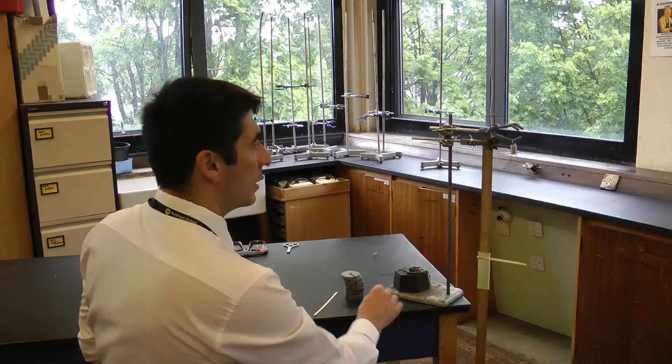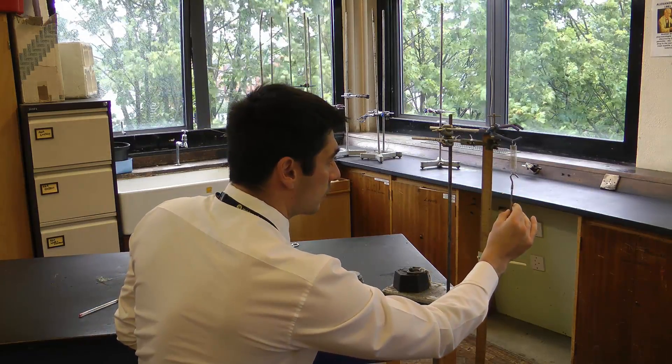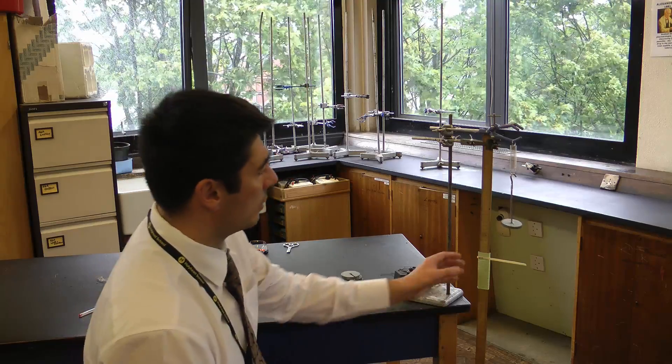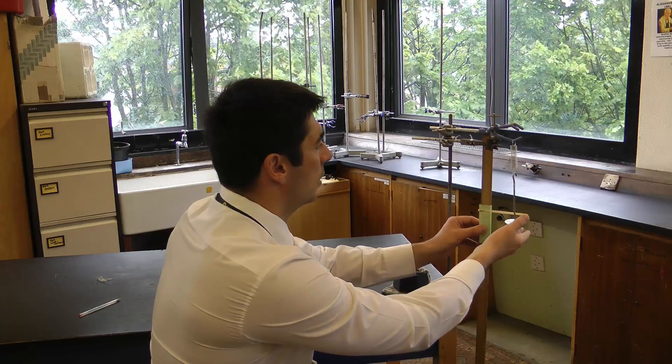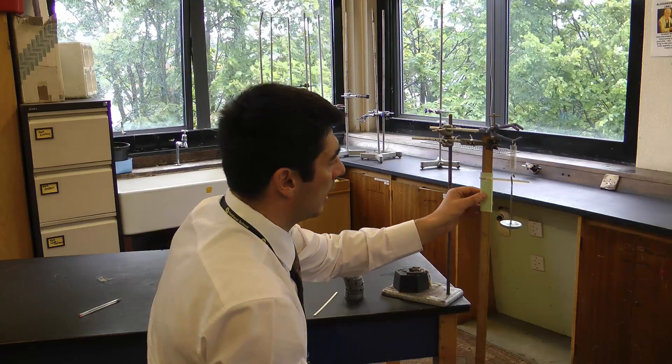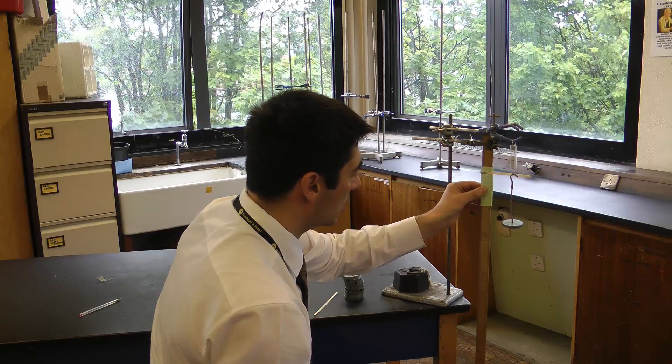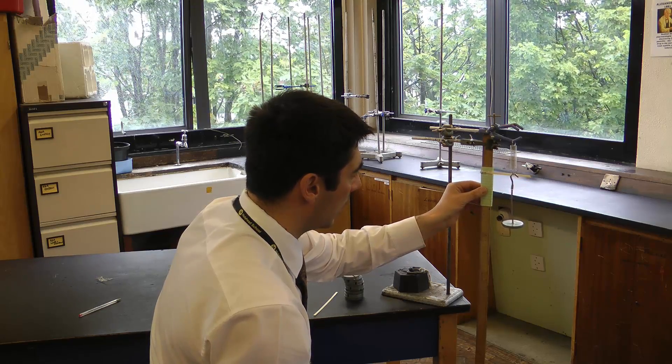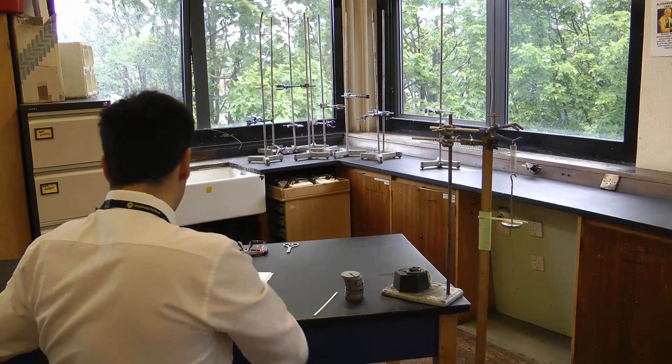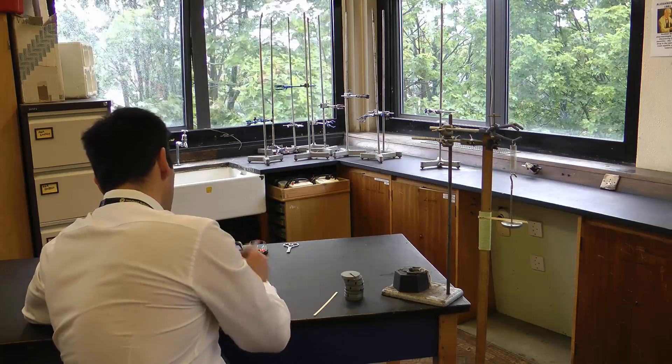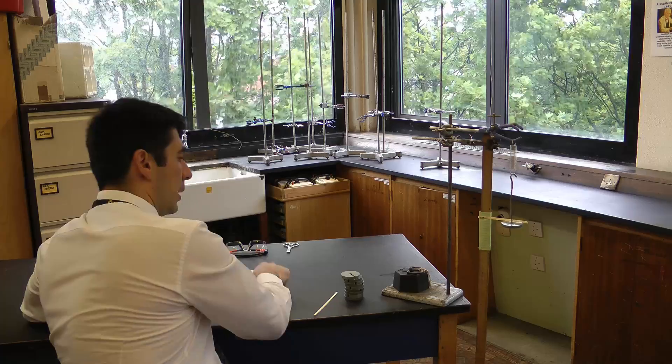So now I'm going to add a 100 gram mass. Wait till it stops bouncing around. Take my pointer and slide it up to the bottom. I'm getting a value of 8.4 centimeters. So reading number 1 was 5, 8.4 centimeters for reading number 2.